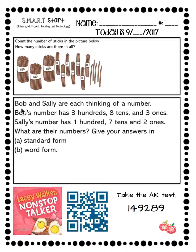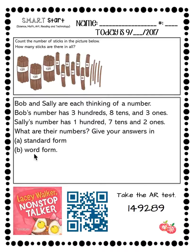Next, the problem is: Bob and Sally are each thinking of a number. Bob's number has three hundreds, eight tens, and three ones. Sally's number has one hundred, seven tens, and two ones. What are their numbers? Give your answer in standard form and word form.